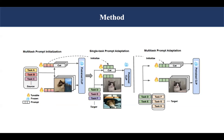Our method consists of two stages: prompt initialization and adaptation. For prompt initialization, we use all tasks to train one prompt. For single-task adaptation, we further fine-tune the prompt on one task.